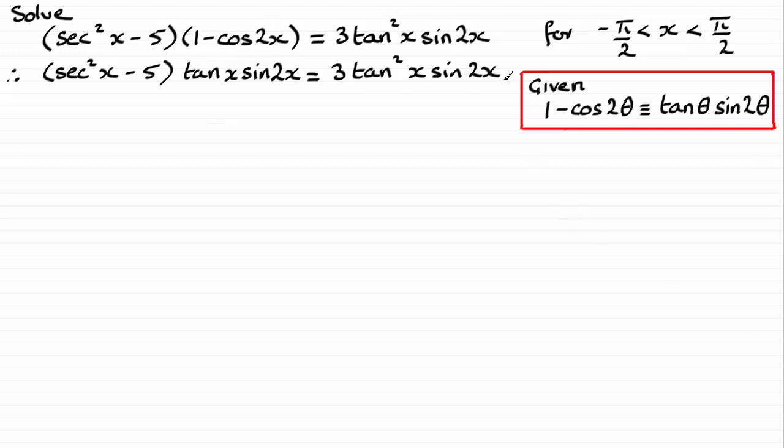Now what I can do next is take 3 tan² x sin 2x from both sides and factorise. I'll show you. What we get is if we take tan x sin 2x outside this bracket,